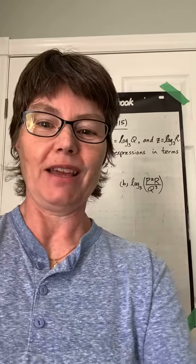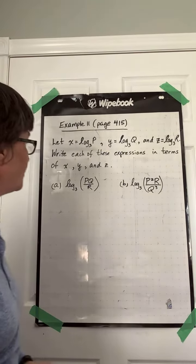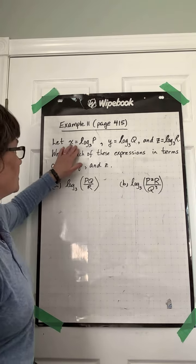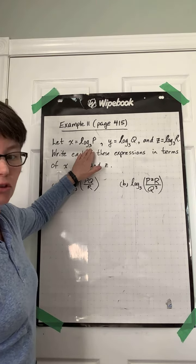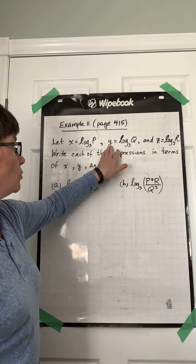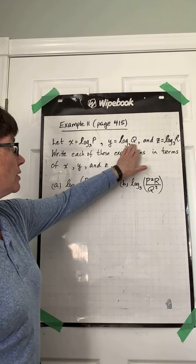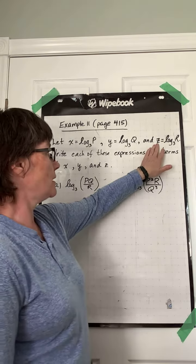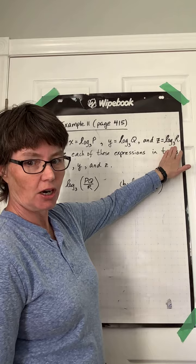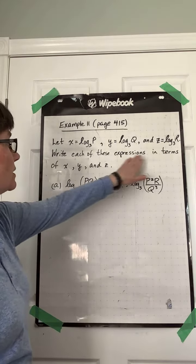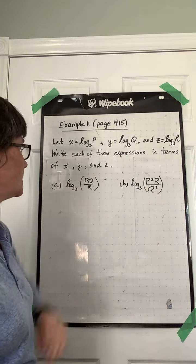Here we are with example 11 from page 415. So let x this time equal log base 3 of p, y is equal to log base 3 of q, and z is equal to log base 3 of r. Write each of these expressions in terms of only x, y, and z.